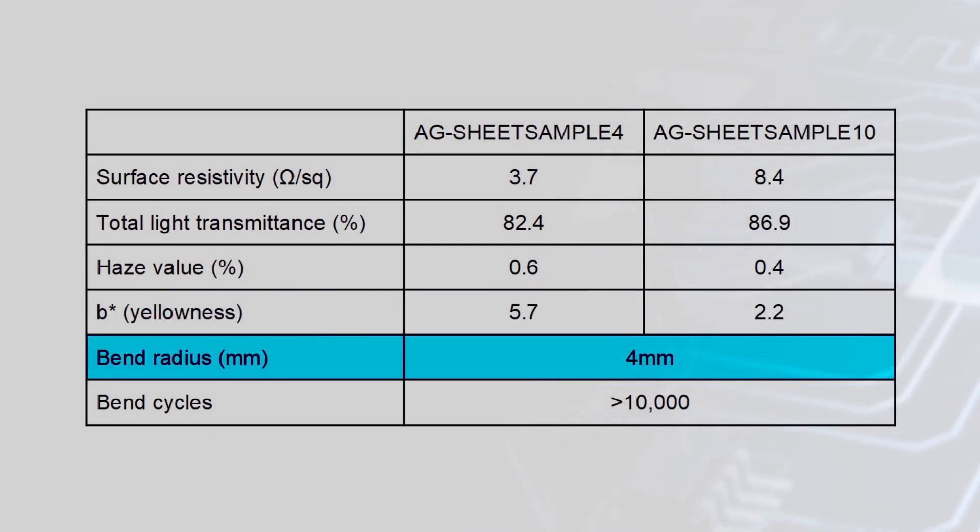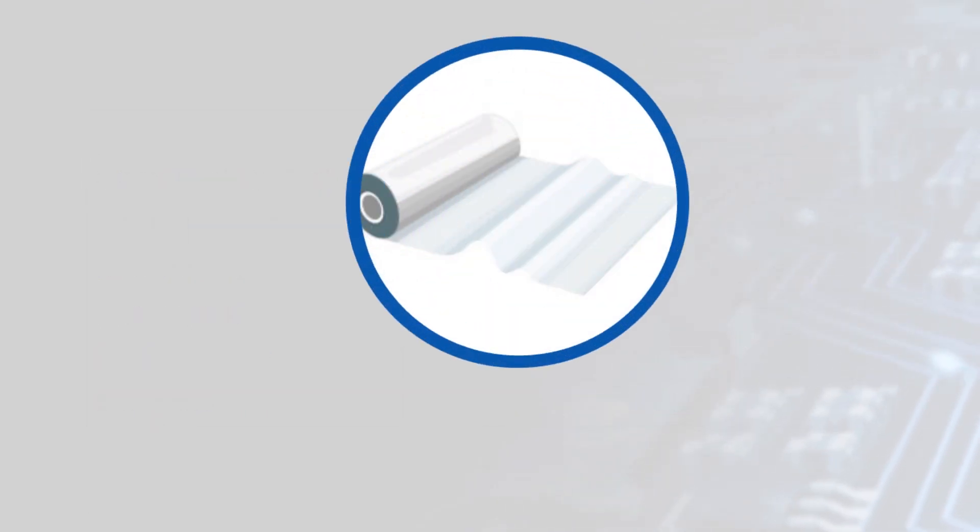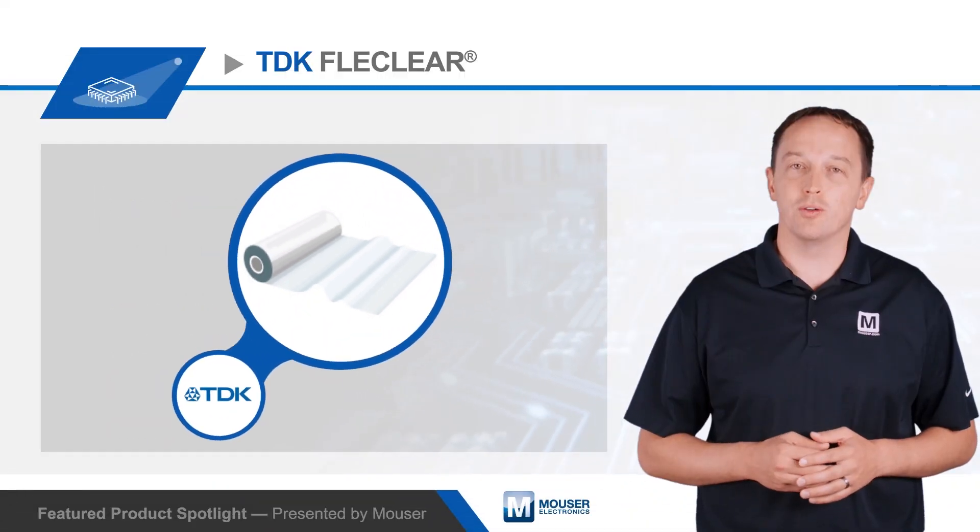The films also offer a tight bend radius and higher bend durability, which is critical for use in wearables and on curved surfaces. Finally, AG stacked films don't require a high-temperature annealing process like ITO films do.